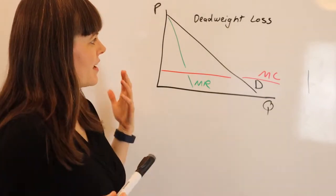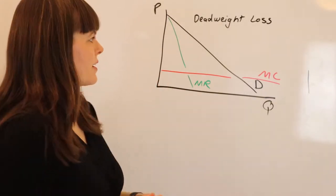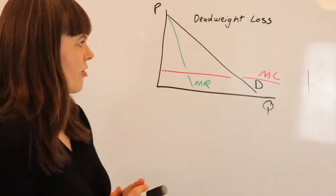Monopolies are not great because they have deadweight loss. So how do we find deadweight loss on a graph?